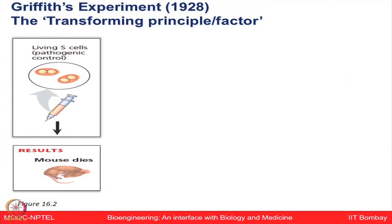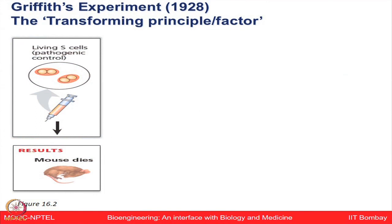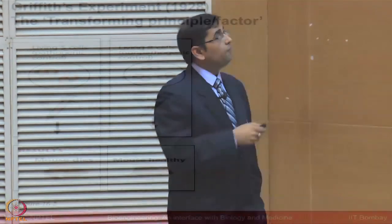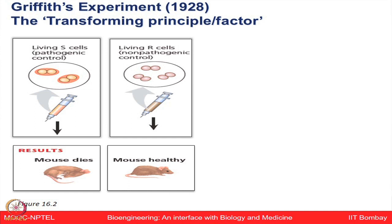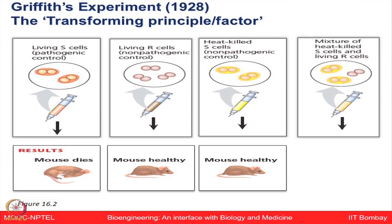The first condition: if you have S capsule which you are injecting in the mouse, mouse dies because of the virulence from the capsule. If you have living R cells, they are non-pathogenic, they will not have any impact, so mouse remains healthy. If you have heat killed S cells, you are killing the capsule layer, that makes it non-pathogenic and again mouse will remain healthy.